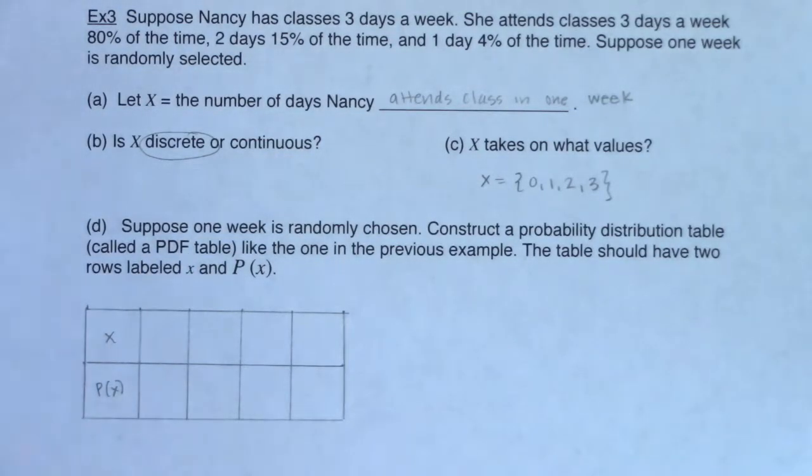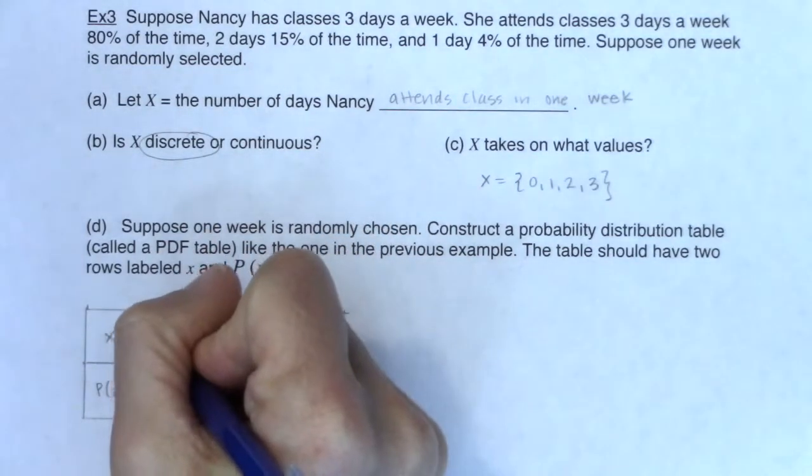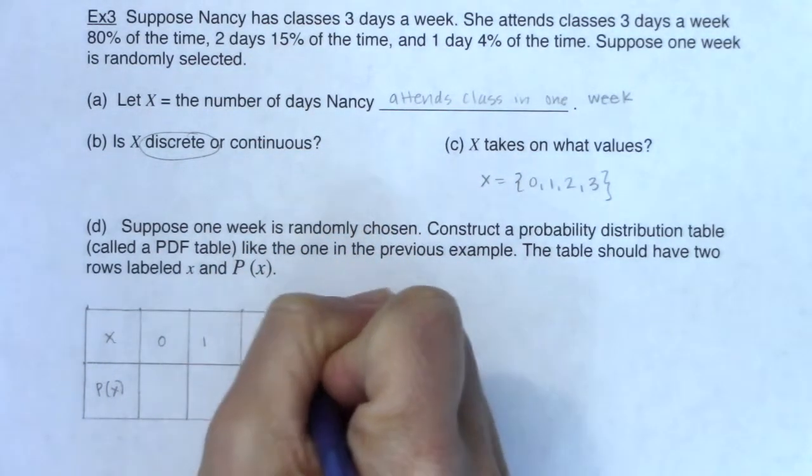All right, so I'm starting to make my table. I've got X on the top row, P of X on the bottom row, and the sample space always goes on the top row. So we'll go zero, one, two, and three, always.